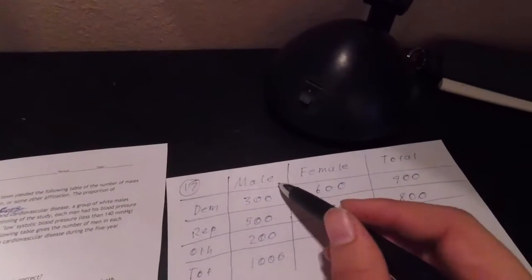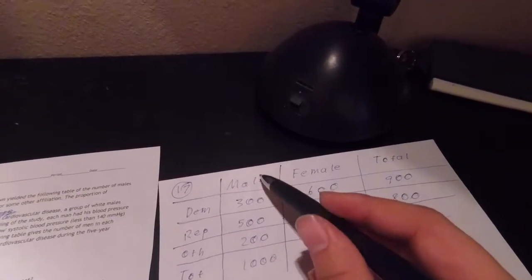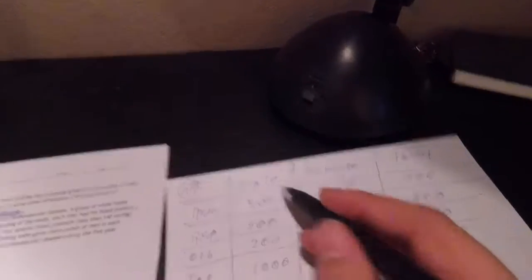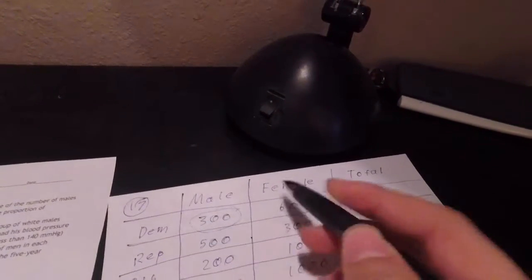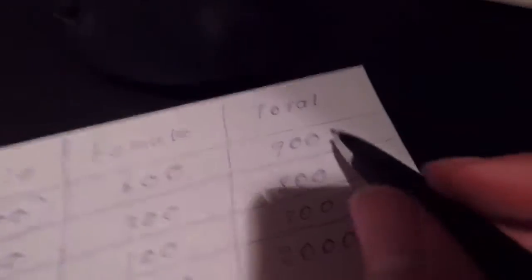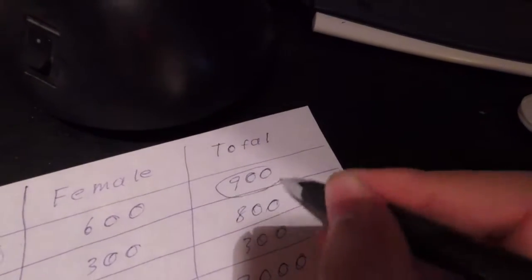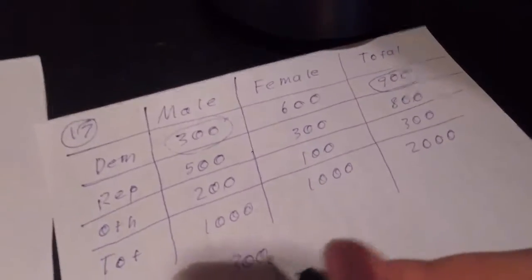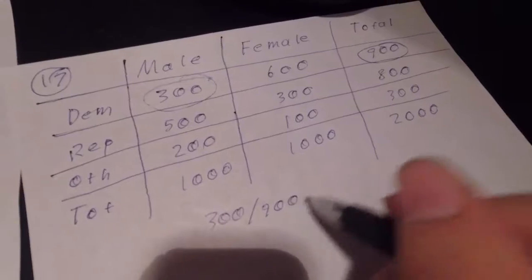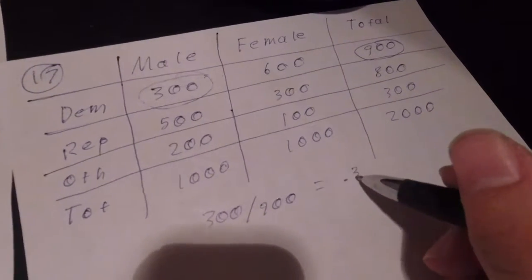we look for the number of males, which is 300, who are Democrat. The number of males who are Democrat is 300. We're trying to find the proportion of Democrats who are male, so we look for the total number of Democrats. 300 over 900 yields us 0.33.